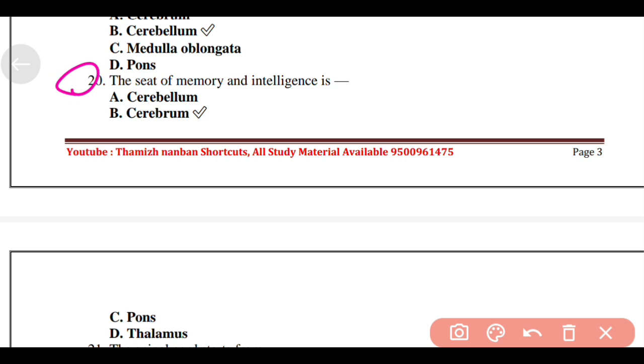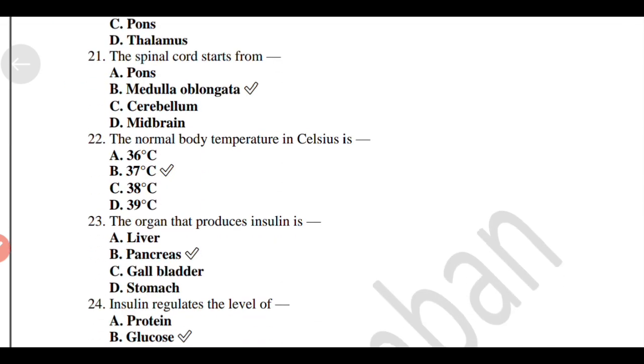The seat of memory and intelligence is Option B, Cerebrum. The spinal cord starts from Medulla oblongata.